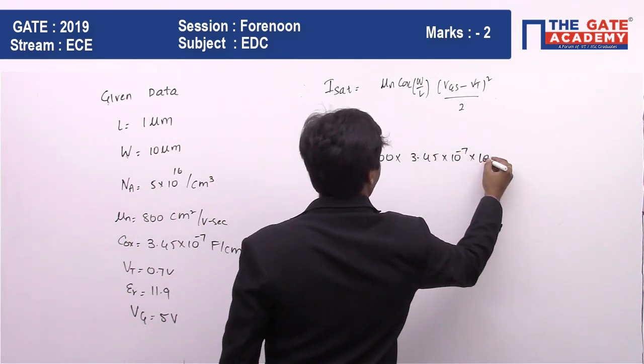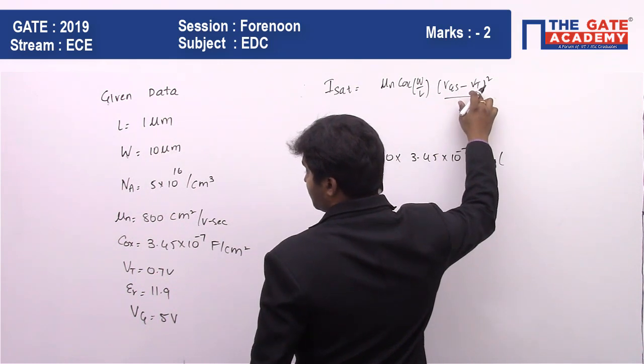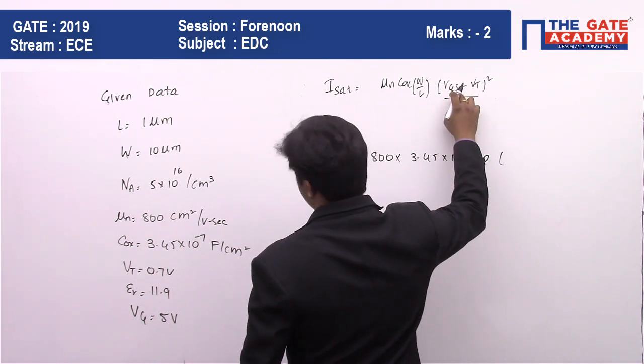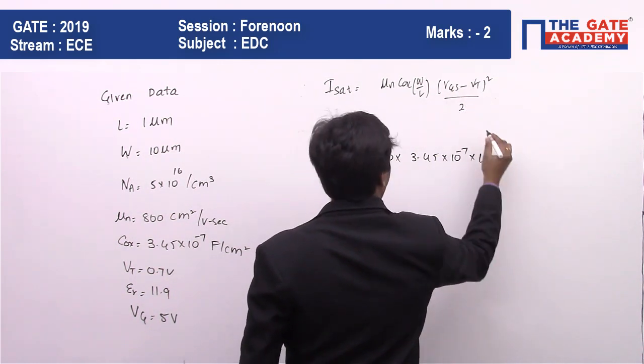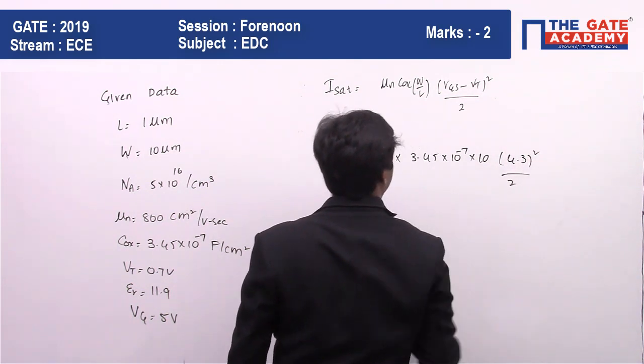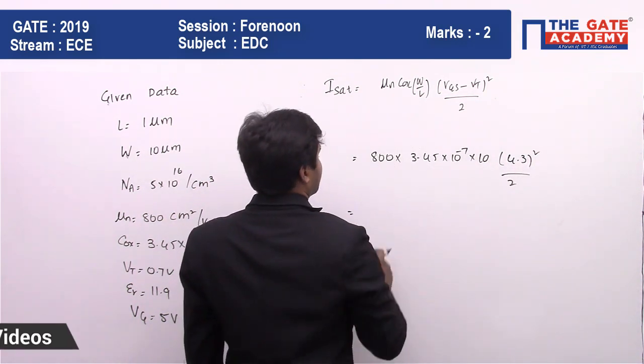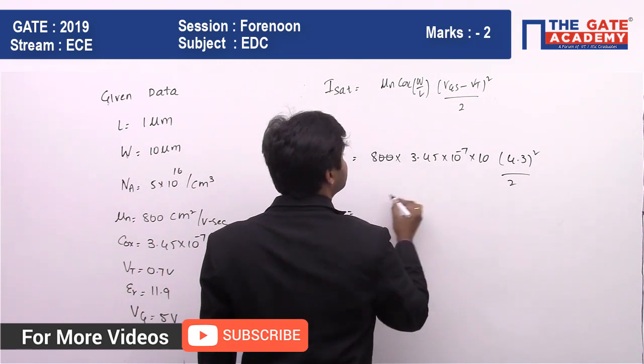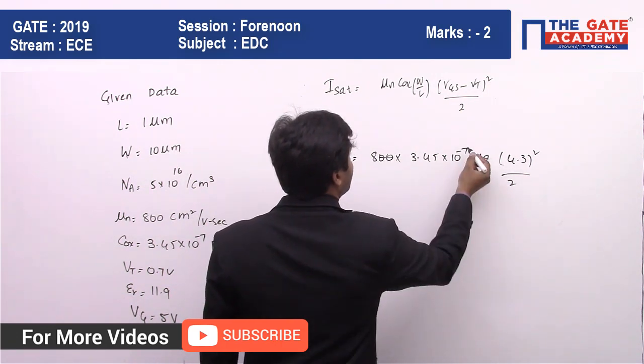Vg - Vt, where the source is considered to be grounded, so Vg - Vt is going to be 4.3, whole square, divided by 2. So you can solve this: two zeros and one zero get cancelled out, you will have 10^-4 here.